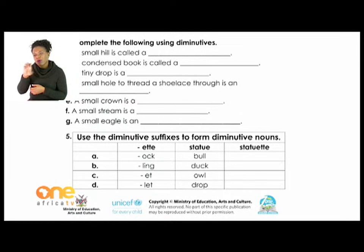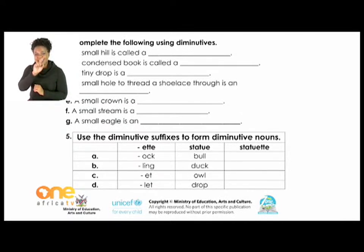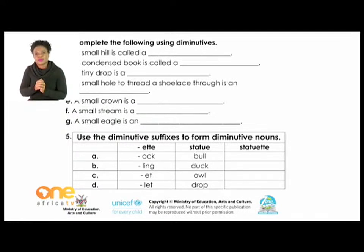Activity Five says: 'Use the diminutive suffixes to form diminutive nouns.' The diminutive suffix '-ette' is given as an example — from the noun 'statue' we get 'statuette'. You can do the rest on your own.